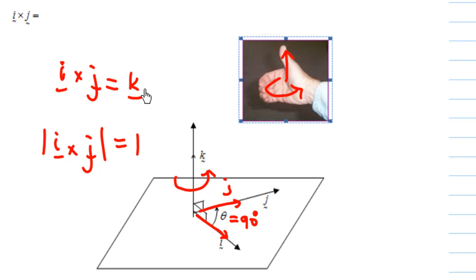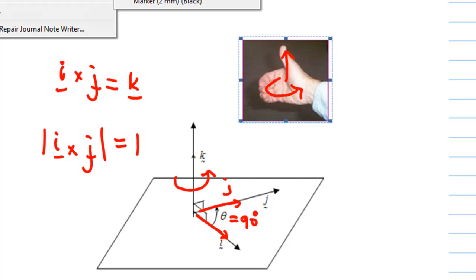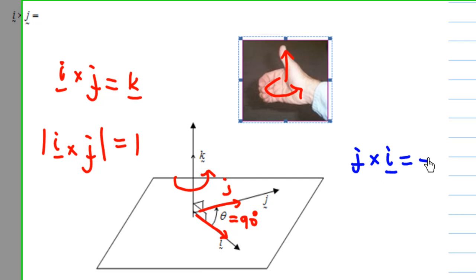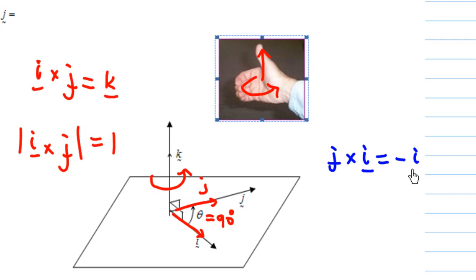Once you know i cross j, we can also find j cross i. j cross i is the negative of i cross j, which gives you minus k — meaning it points downwards.